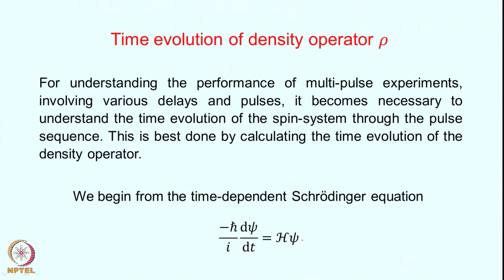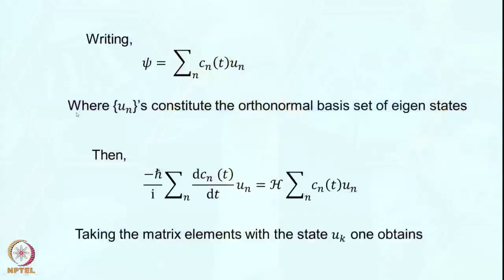For this, we begin from the time-dependent Schrödinger equation. The time-dependent Schrödinger equation describes how the state evolves with time: −(ℏ/i)(dψ/dt) = Hψ, where H is the Hamiltonian describing the system containing all interactions and ψ is time-dependent. To achieve this, we write the wave function ψ as a superposition of various eigenstate functions: ψ = Σₙ cₙ(t)·uₙ, where cₙ(t) are the coefficients and uₙ are eigenstates forming an orthonormal basis set.